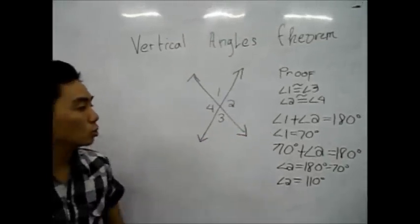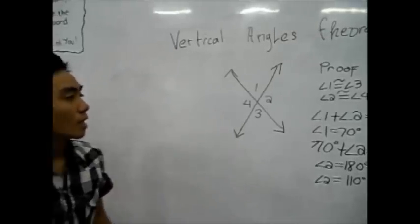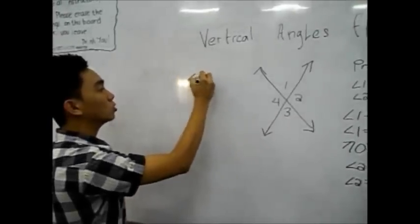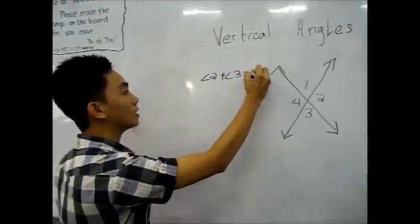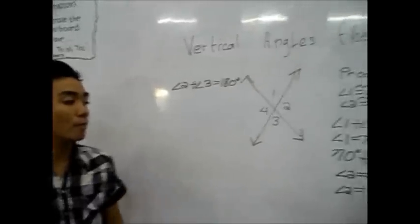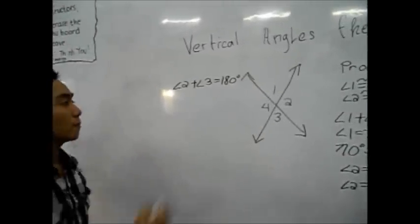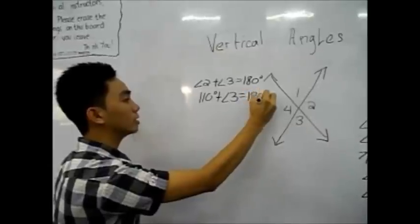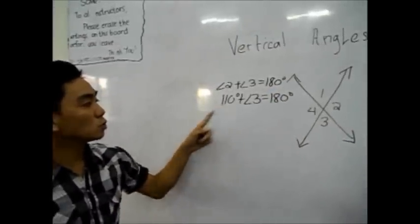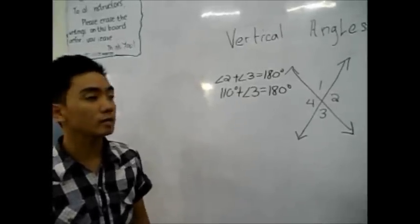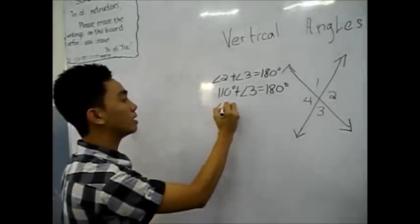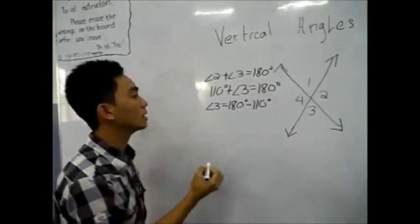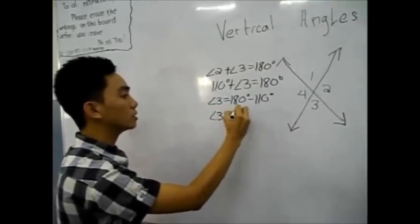Now we have the values of Angle 1 and Angle 2, so we can solve Angle 3. Angle 2 and Angle 3 is also a supplementary angle, so Angle 2 plus Angle 3 equals 180 degrees. Substituting the value of Angle 2: 110 degrees plus Angle 3 equals 180 degrees, so Angle 3 equals 180 minus 110 degrees, giving us 70 degrees.